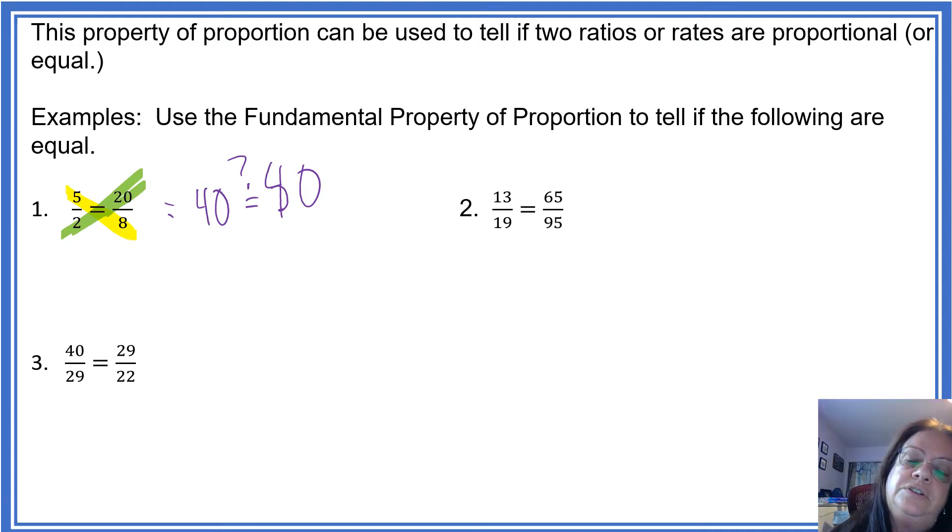Number 2. So now we're going to look at 13 times 95, and 19 times 65. I could attempt these in my head, but it's been a long day, so the brain is not quite as reliable. So I've got out my calculator. So we have 13 times 95, and I get 1235. So does that equal 19 times 65? It sure does.